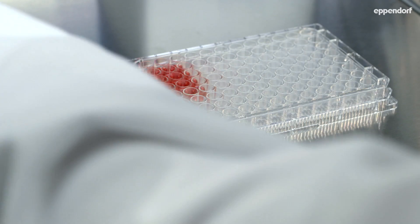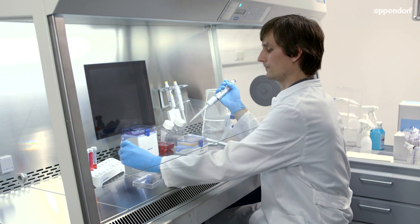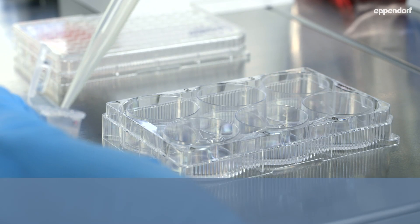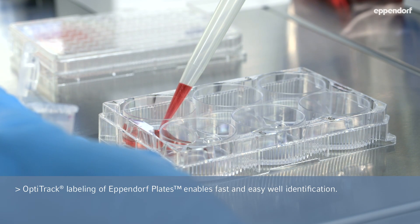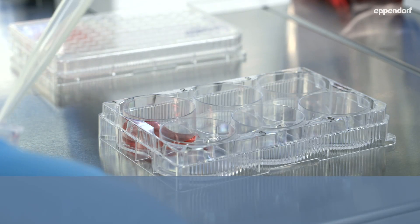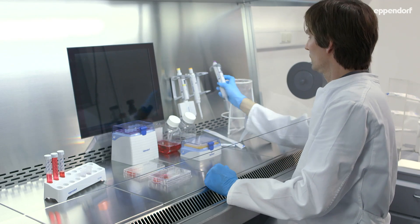All Eppendorf cell culture plates have a high contrast alphanumeric labelling for fast and easy well identification. A defined corrugated gripping area guarantees safe handling.